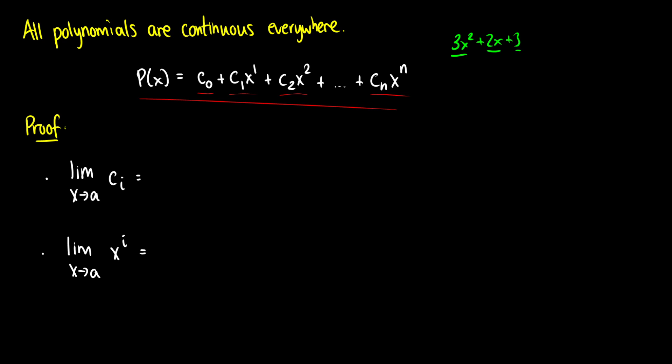In general, a polynomial is a constant plus another constant times x, plus another constant times x², and so on up to the highest power. To show polynomials are continuous everywhere, let's start with the limit of a constant and the limit of a variable. The limit as x approaches a of a constant is just the constant itself — no variable, so it doesn't change. The limit as x approaches a of x to the i is just a to the i, since x is approaching a.